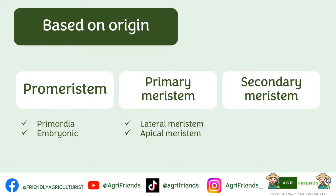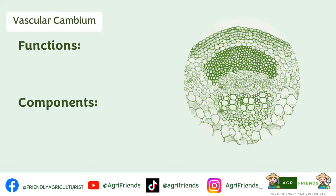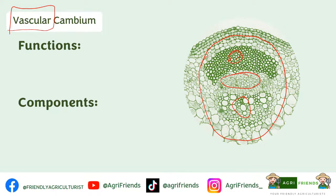The third type is the secondary meristem. These are found in mature tissues of roots and shoots. It develops later in plant life and its function is for adding secondary tissue to the plant body and increasing the girth or diameter of the plant. The examples are the cork cambium and the vascular cambium. The vascular cambium can be found between the xylem and the phloem. Vascular cambium is an actively dividing layer responsible for the increase in diameter of stem and roots and for forming woody tissues. It has two components: the ray initials and the fusiform initials.